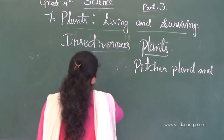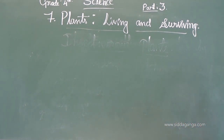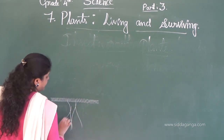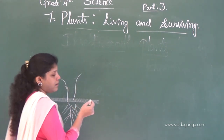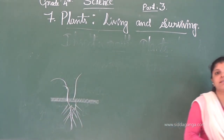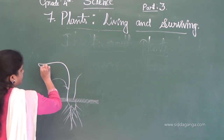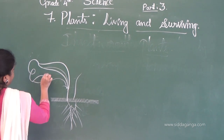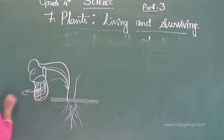Venus flytrap, sundew, and pitcher plant are examples of insectivorous plants. How do these plants catch insects? For example, the pitcher plant has roots that absorb water and minerals from the soil. It has a pitcher — a jug-like structure.